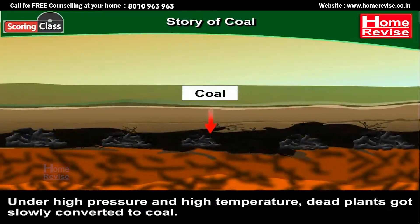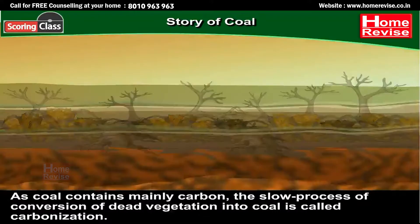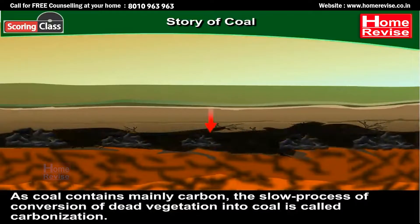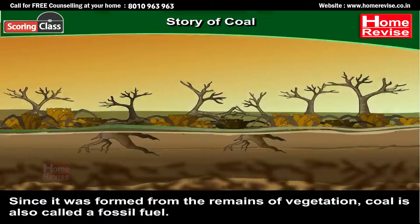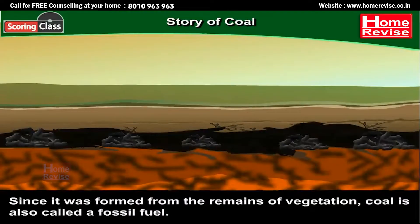Coal is essentially dead plants. As coal contains mainly carbon, the slow process of conversion of dead vegetation into coal is called carbonization. Since it was formed from the remains of vegetation, coal is also called a fossil fuel.